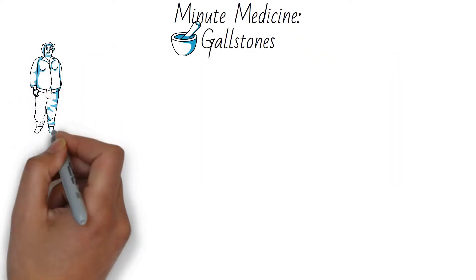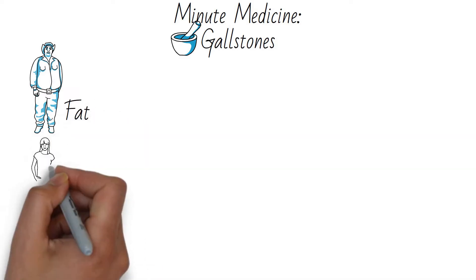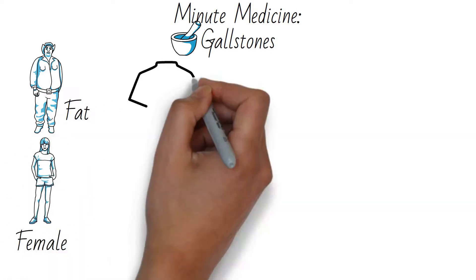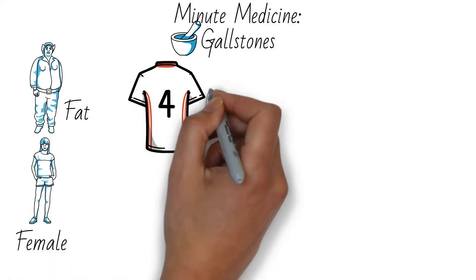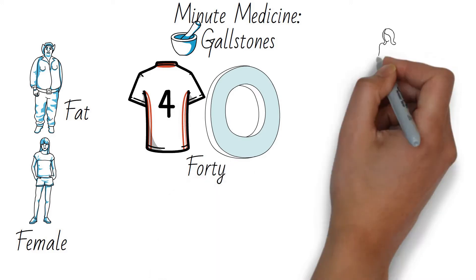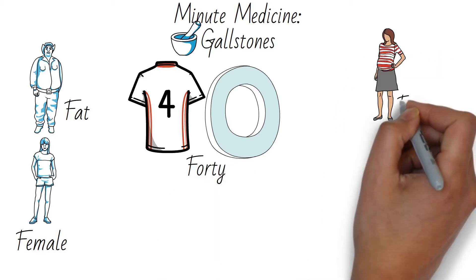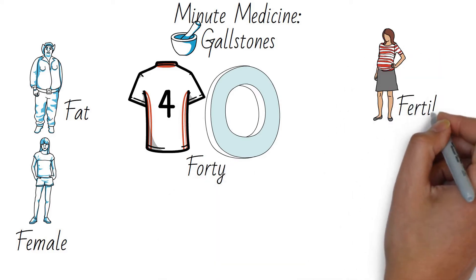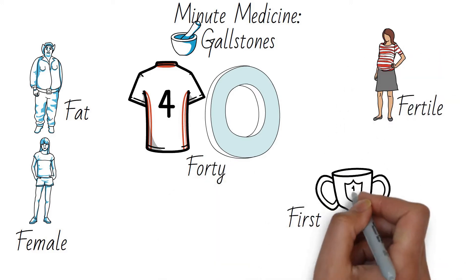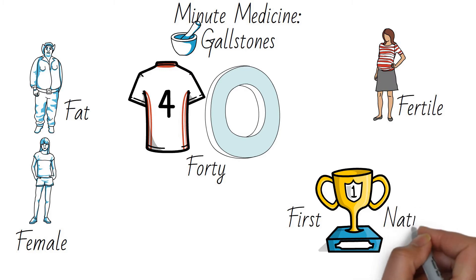This video will be about gallstones. Gallstones occur most commonly in people with the 5 F's, which are fat, female, 40 for age, fertile meaning multiple pregnancies, and first nations meaning Native American.